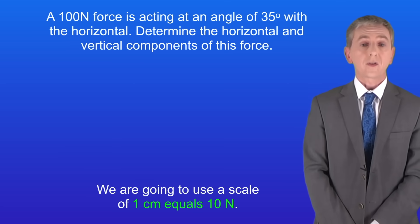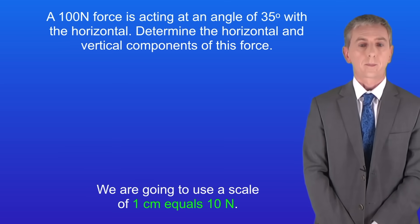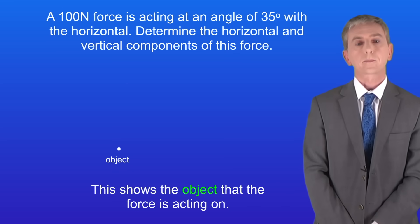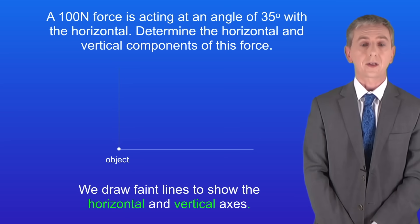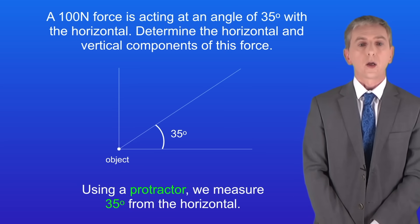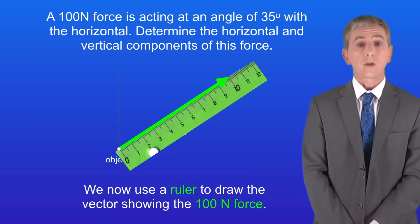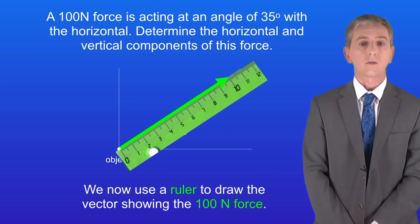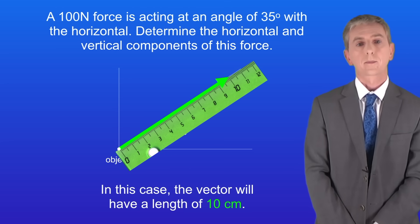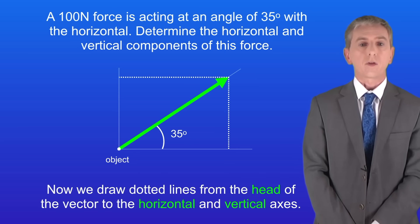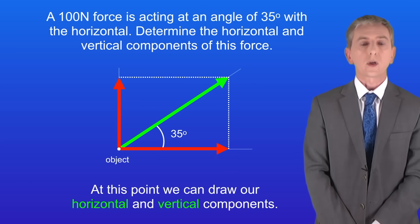We're going to use a scale of 1 centimeter equals 10 newtons. Here's the object that the force is acting on. First we draw faint lines to show the horizontal and vertical axes. Using a protractor we measure 35 degrees from the horizontal. We now use a ruler to draw the vector showing the 100 newton force - in this case the vector will have a length of 10 centimeters. Now we draw dotted lines from the head of the vector to the horizontal and vertical axes, and at this point we can draw horizontal and vertical components.